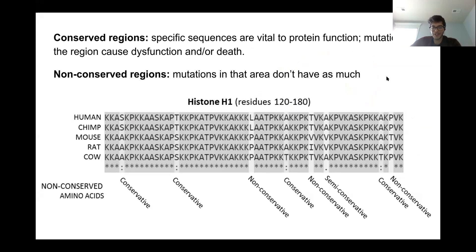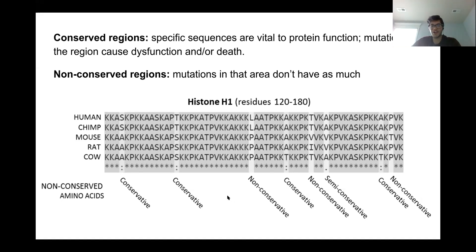We've talked about how mutations happen in DNA and can cause changes in proteins. Since proteins have very specific structures dependent on their sequences, you might wonder why proteins don't just stop working when the sequence mutates. The answer is, if certain conserved parts of proteins mutate, the protein won't work anymore, the organism can't survive, and those mutations die out. These are called conserved regions. However, there are non-conserved regions — the more disordered parts of proteins that matter less — where mutations can happen and the organism still survives.